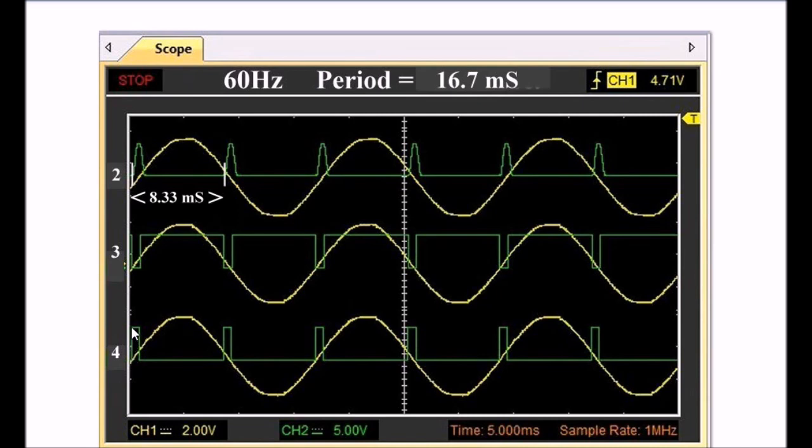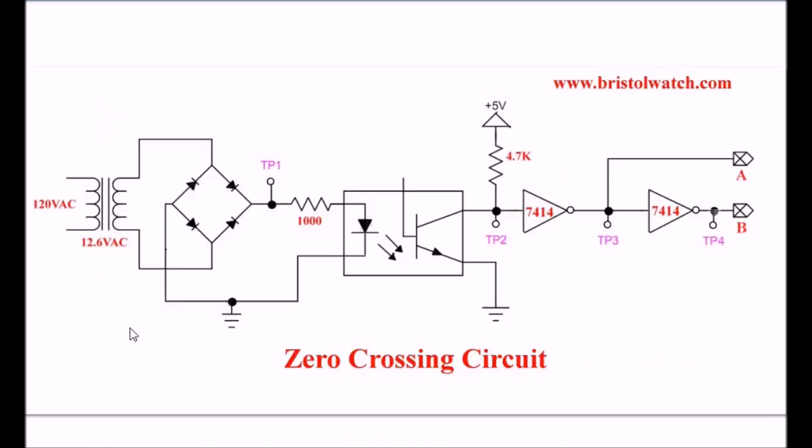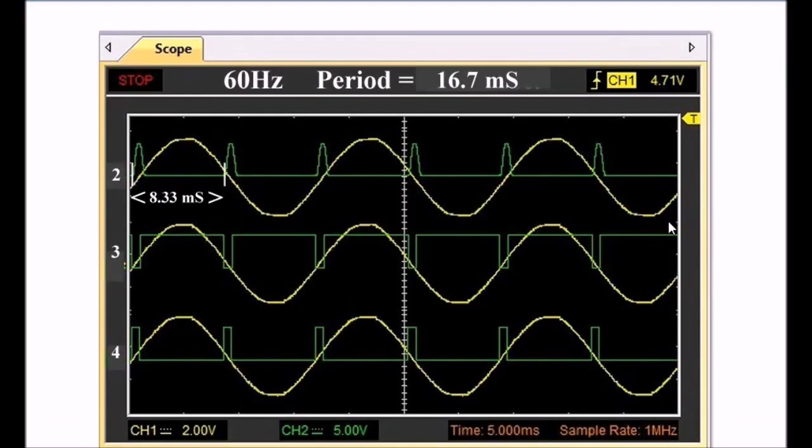Maybe you want to use count pulses for a digital clock, whatever. That's it. Same circuit, add two 7414 inverters and you get these nice clean output pulses.